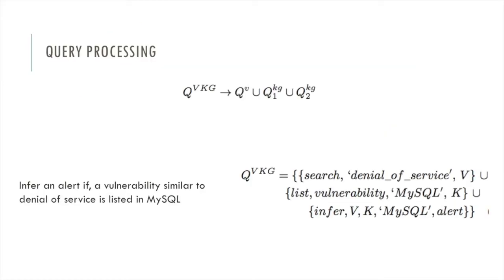Here is a query processing agent built on the VKG structure. An input query Q^VKG can be decomposed to multiple components that can run on different parts, namely the knowledge graph path and the vector path.